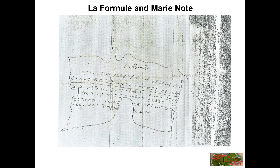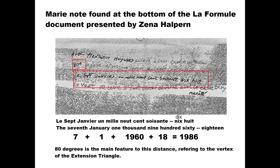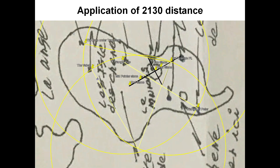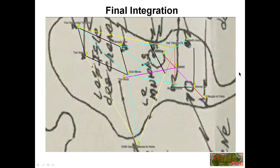We move into the other Zena-Halpern document, La Formulá, and the Marie Note, where we find this distance. And also the 80-degree angle, which is the extension triangle. And there's the extension triangle — the 80-degree angle — and we find the hole and the valve. Then we put it all together and everything is located: mostly the hole under the trapdoor, the valve, and the oak hindrance.